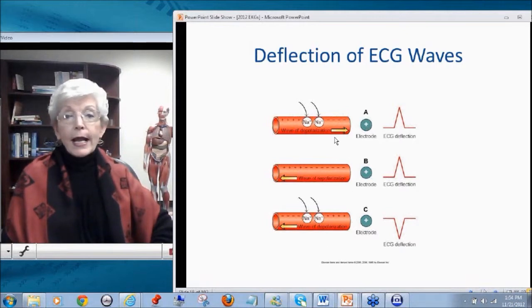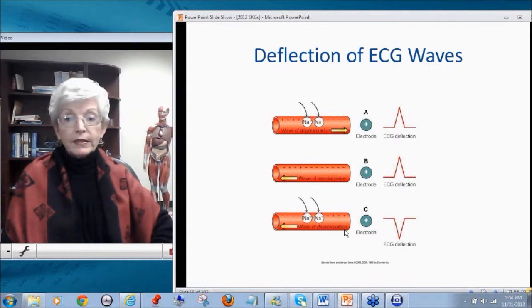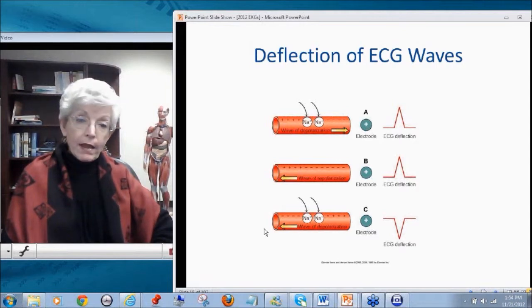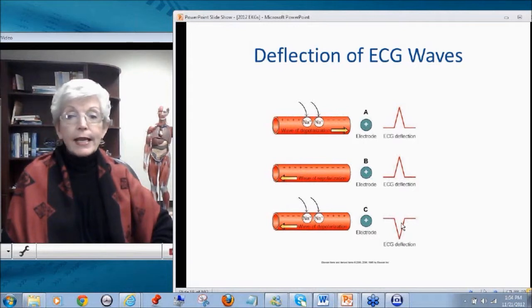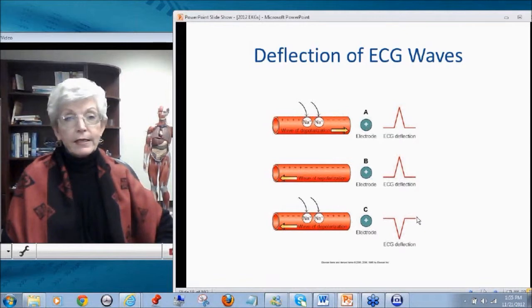Well, let's look what happens if during depolarization, the flow of electricity is headed away from the positive electrode. You then get a negative deflection. As we go through the 12 leads, we'll go back to this and back to this.